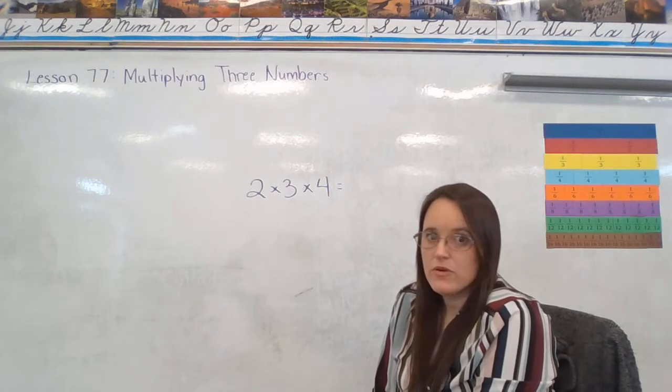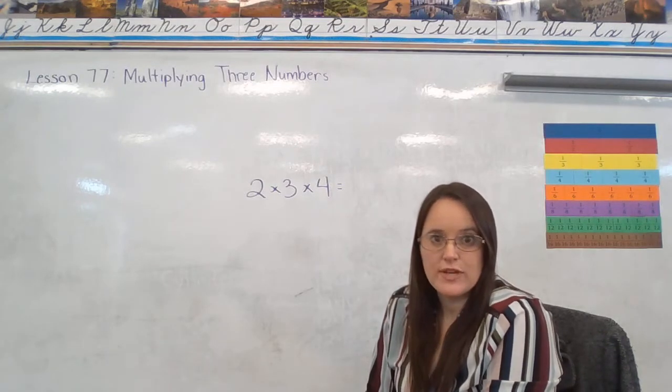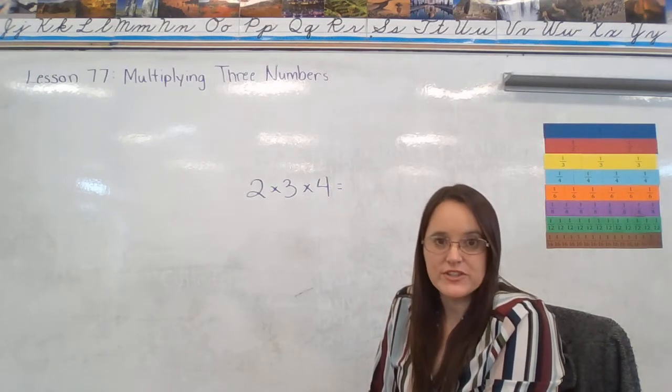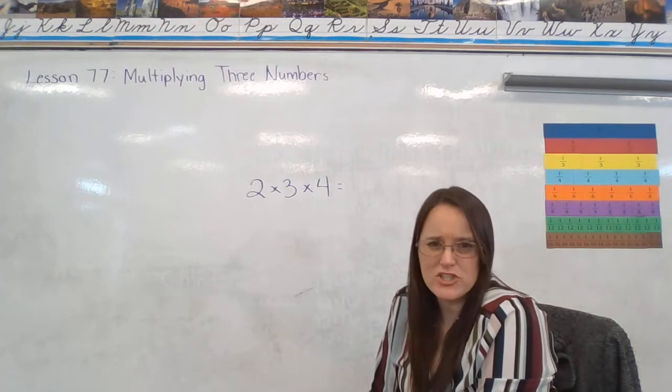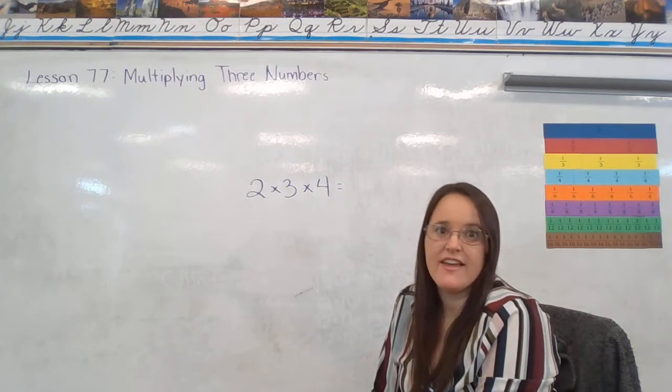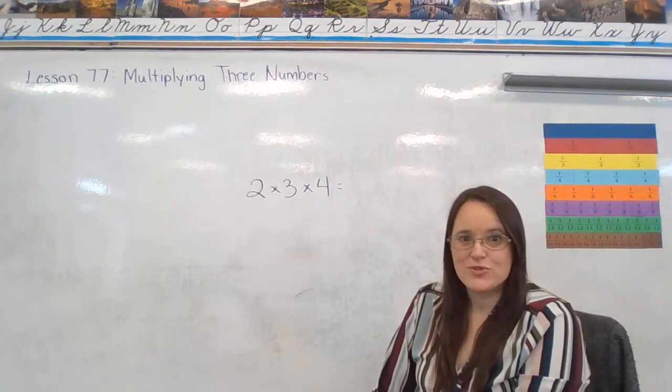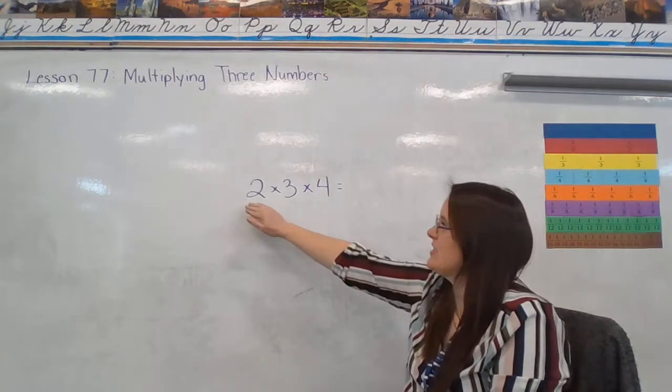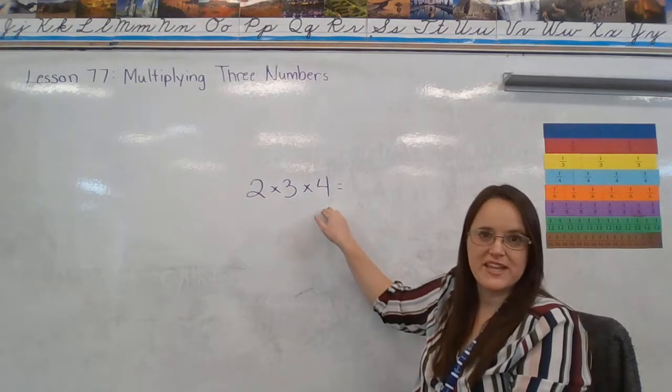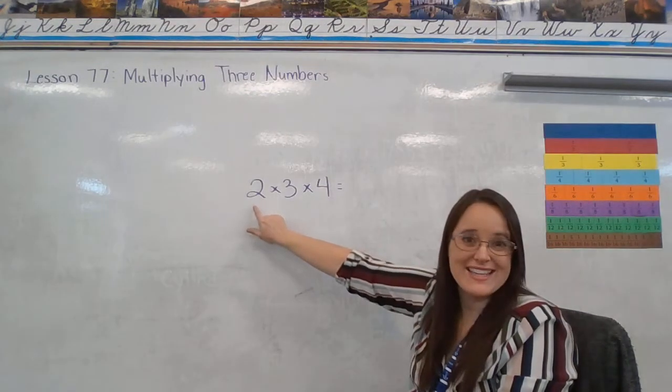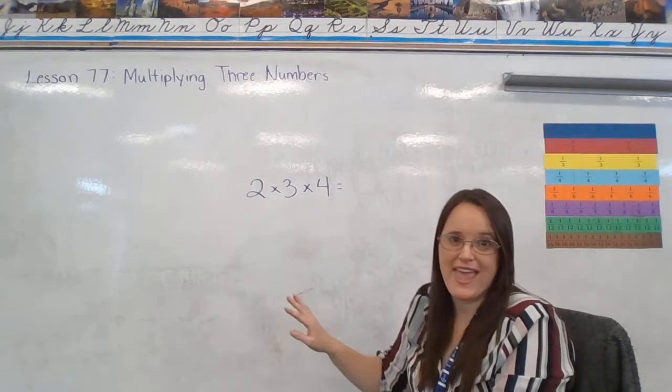So we're only going to multiply two numbers at a time. Your first task is to decide which two do I want to multiply first. Let me share with you how I usually think about that. I look at 2 and 3 and 4 and I say, you know what, I can double just about anything.